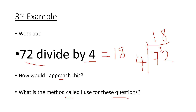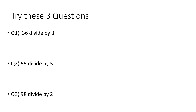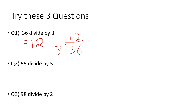Here are some division questions for you to try. Pause the video, try the questions, and come back to check your answers. Answers: 36 divided by 3 using the bus stop method — 3s into 3 go once, 3s into 6 go twice, so the answer is 12. Next: 55 divided by 5 — 5 into 5 goes once, 5 into 5 goes once, so the answer is 11.